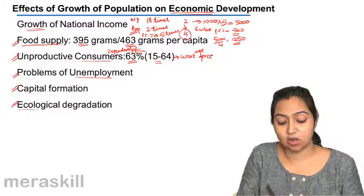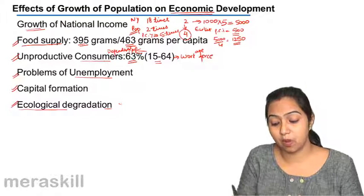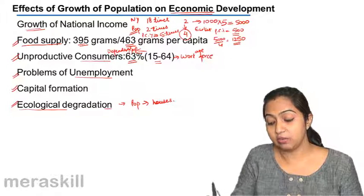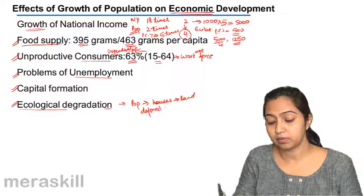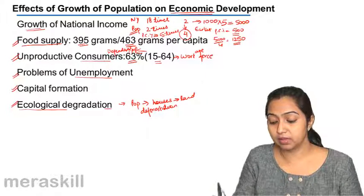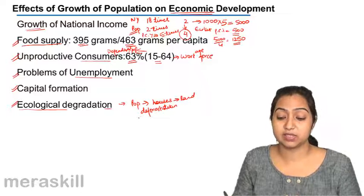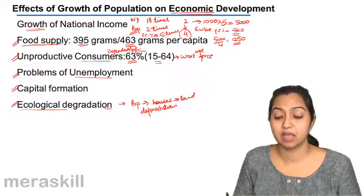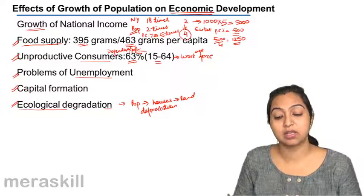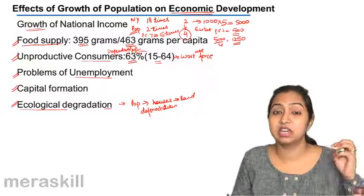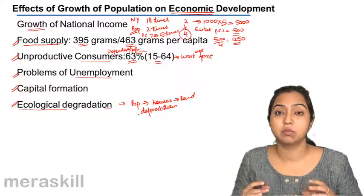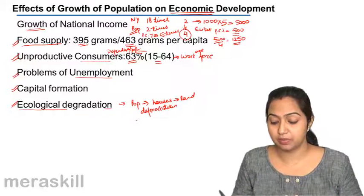There is also ecological degradation, because more population means you need more houses, and you need more land for that, which leads to deforestation and similar problems. So ecological degradation also takes place. This is how the growth of population impacts our economic development. The economy may grow, but it does not reach all strata evenly because the increase gets distributed among a growing population.